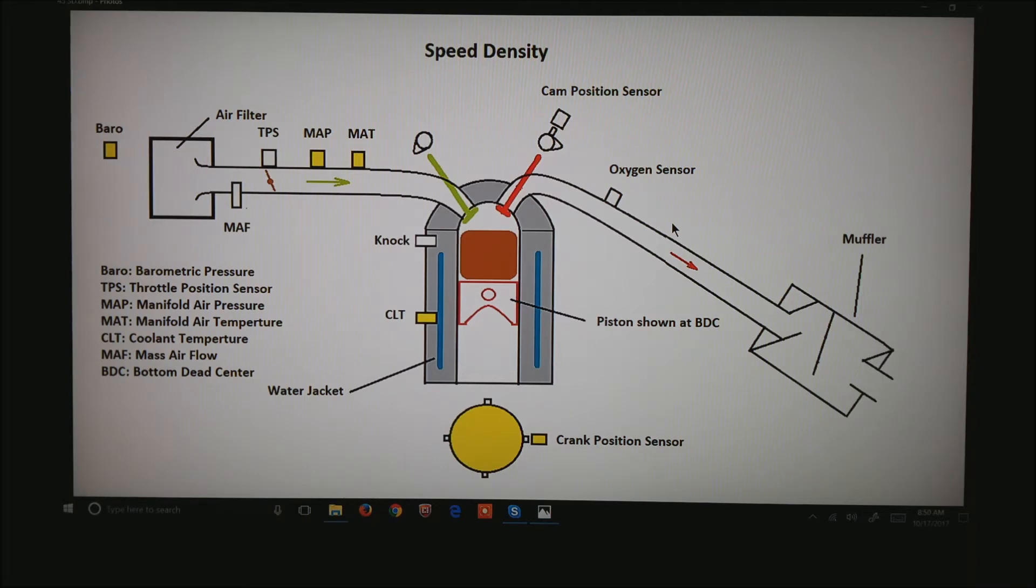What this basically does is uses the calculations from what's known as the ideal gas law that we can calculate the density of the air inside the intake manifold using the manifold air pressure and the manifold air temperature, and the speed at which the motor is running, to determine how much air is making it into the combustion chamber.